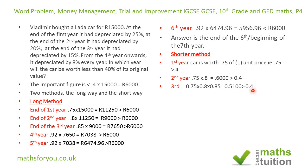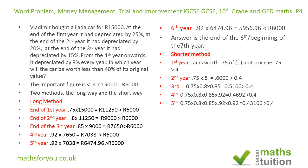At the end of the fourth year it's worth 0.92 of year three's value, giving 0.4692 — still greater than 0.4. At the end of the fifth year it's again 0.92 of year four's value, giving 0.43166 — and this is still more than 0.4, so we move to the sixth year.